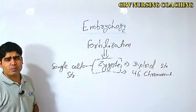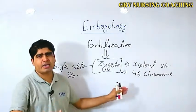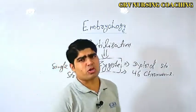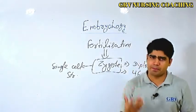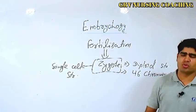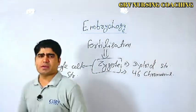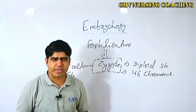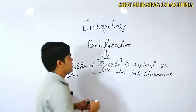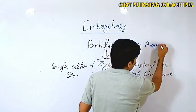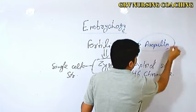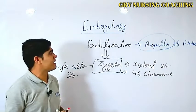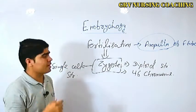Now let's move forward from the zygote — this is where our embryology topic begins. Embryology means it is the study of the human embryo — how a structure forms from the zygote, how it transfers into the uterine cavity. Fertilization takes place in the ampulla of the fallopian tube.